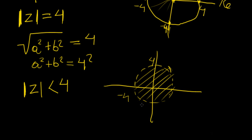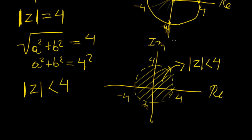So we mark 4, minus 4, and 4 on the real and imaginary axes. This is our region for the set less than 4. We don't need to know the actual values of the complex number — the real and imaginary parts — because all we care about is what the region looks like. This includes all complex numbers that lie within, such as minus 1 plus i, or 2 minus 2i, and so on. Anything that fits inside the circle is contained within that region.